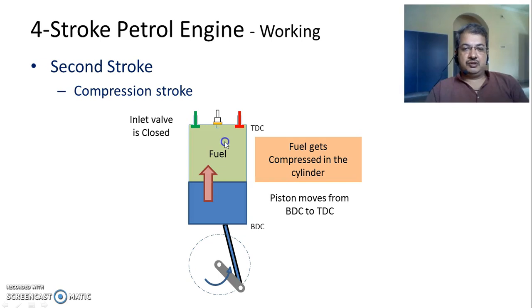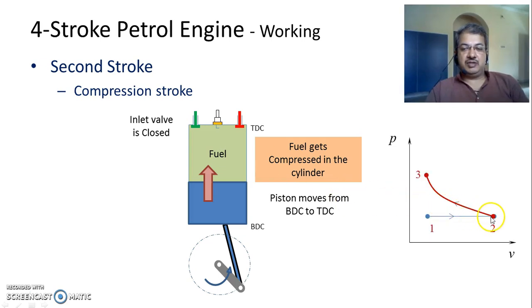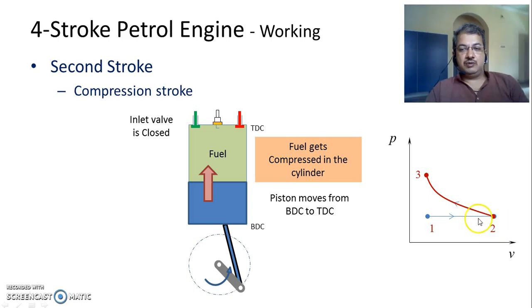This stroke is represented by curve 2 to 3 on the PV diagram, where point 2 to 3 represents the compression stroke — the volume is reducing while the pressure is increasing.